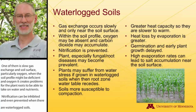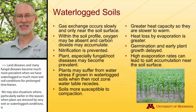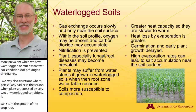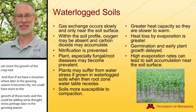We can also have situations where, particularly early in the season, if plants are stressed by very wet or waterlogged conditions, it can stunt the growth of the crop roots. And then if we have a situation where later in the growing season it becomes dry, we could have already stunted the growth of those roots, which could be adding some drought stress later in the growing season. Of course, we know that wet soils tend to be more prone to compaction when we have to be in the field doing field operations, and that can be a detriment.